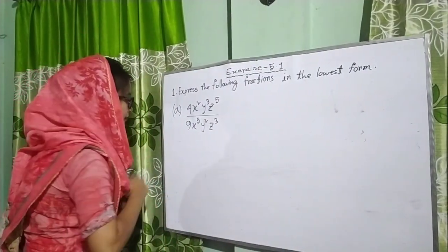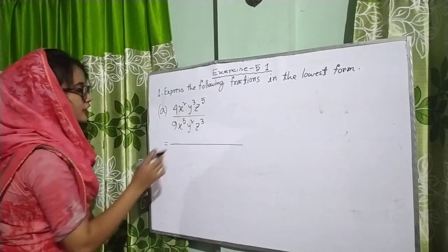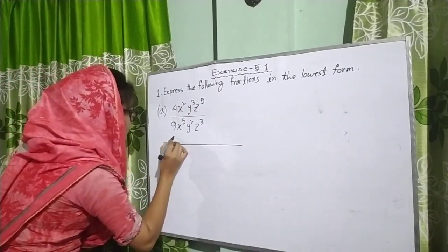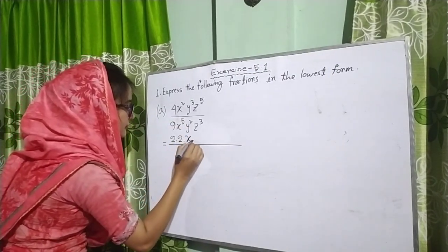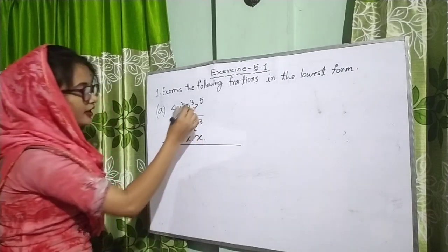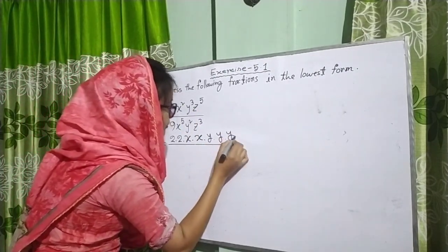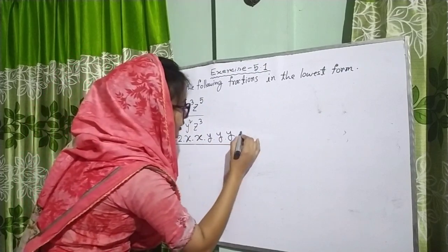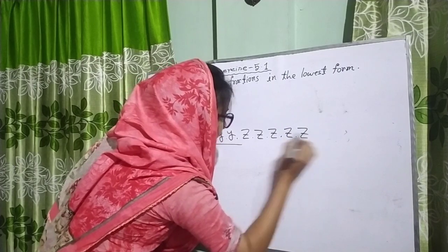Let's solve the problem. First, you have to factorize the numerator and denominator. 4 equals 2 × 2, x squared means x is 2 times, y cubed means y is multiplied 3 times, z to the power 5 means z is multiplied 5 times.